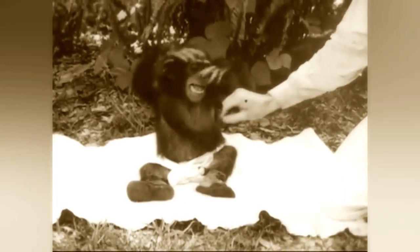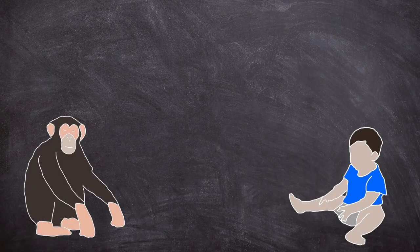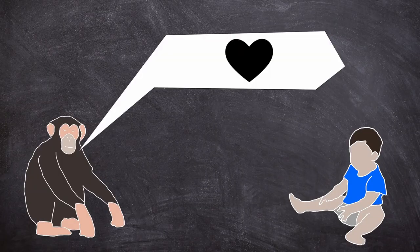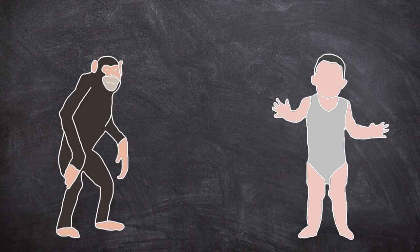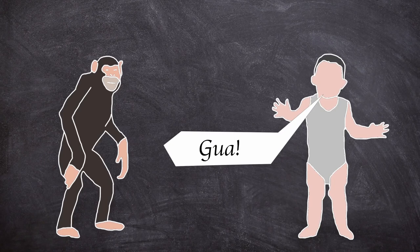As the experiment progressed, it seemed like the two, especially Gua, had become attached to each other. Always making a beeline for him when he entered the room, and noticeably got more excited when playing with Donald. If Gua was admonished for doing something wrong, Donald would go up to her and hug the chimpanzee. As Donald's speech developed, he was able to even say his sister's name.